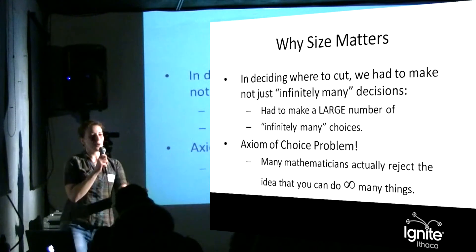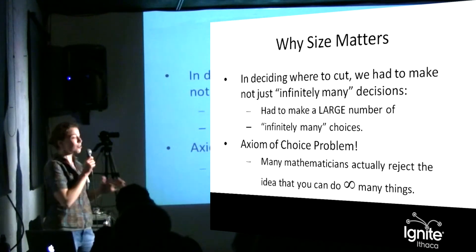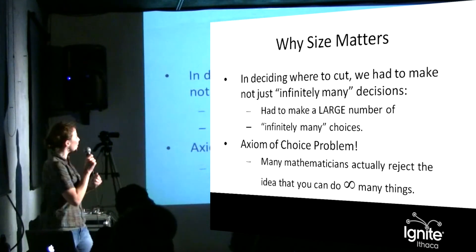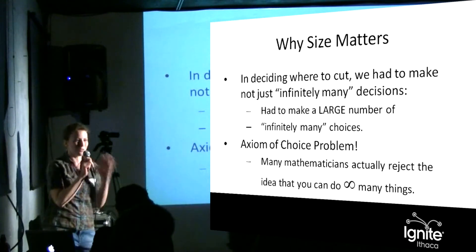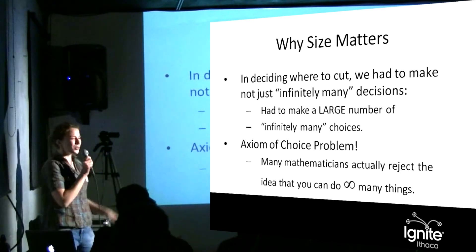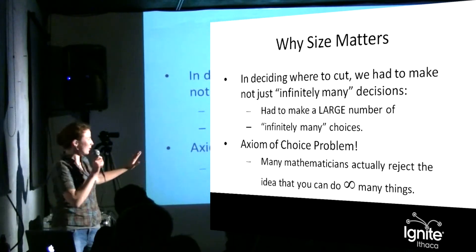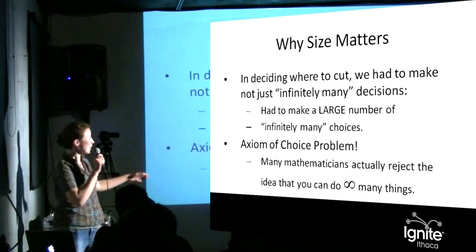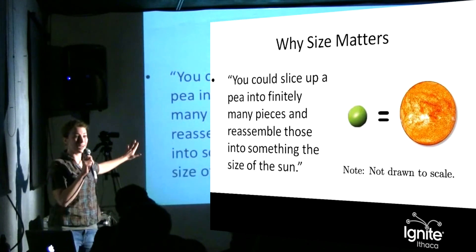So in deciding where to cut, we had to make infinitely many decisions, and not just infinitely many, but more like an extra large infinity of infinitely many decisions. So this thing is called the axiom of choice, the ability to be able to do infinitely many things.